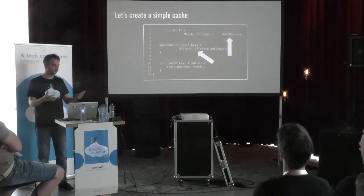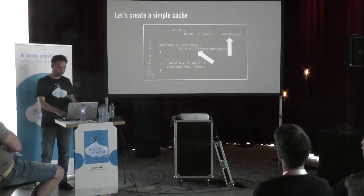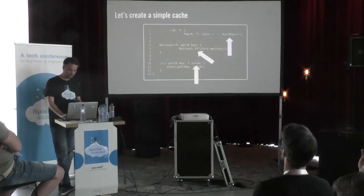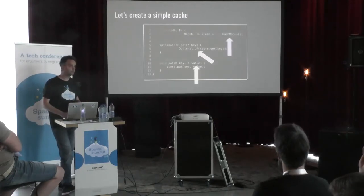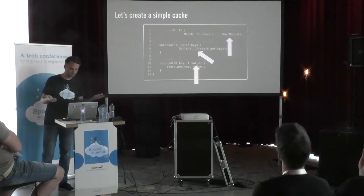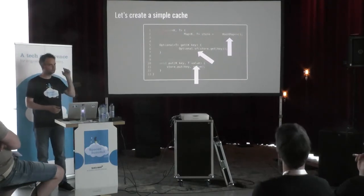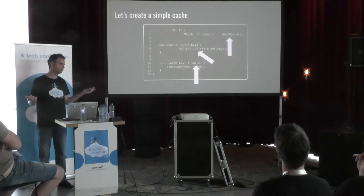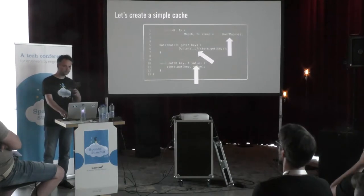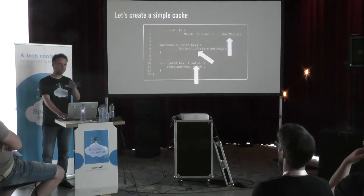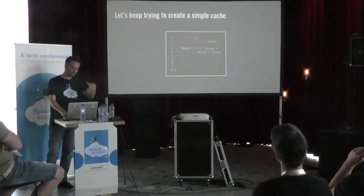Something else: you can also put null into the cache if you are not careful, and that will also break the get if we don't fix this Optional. But I was just saying I was going to put in integers in my example — so why can I put in null? This is basically how Java works, and we can work around this.